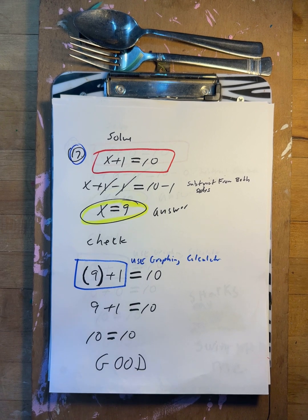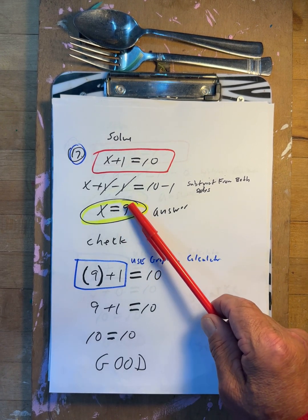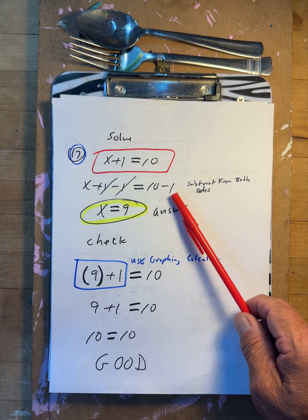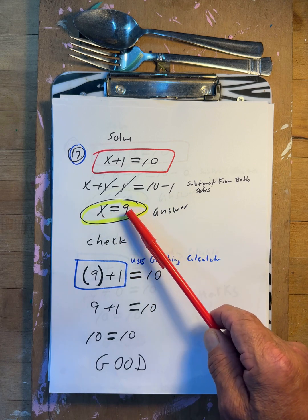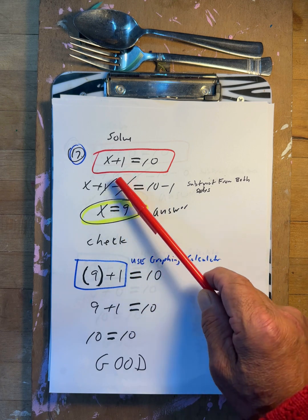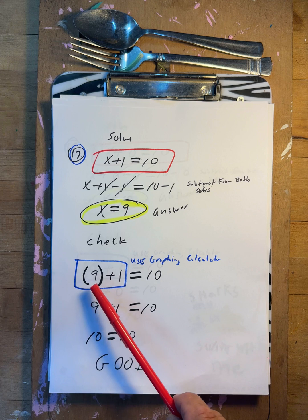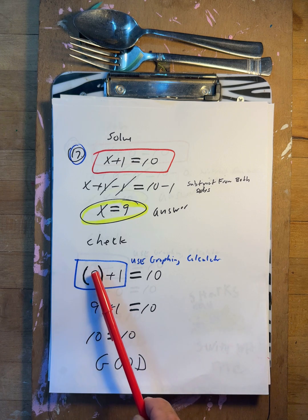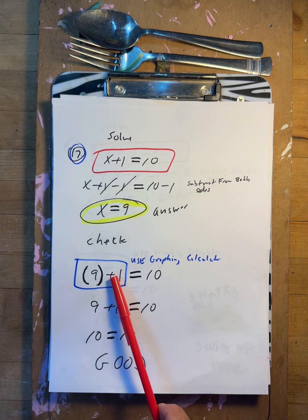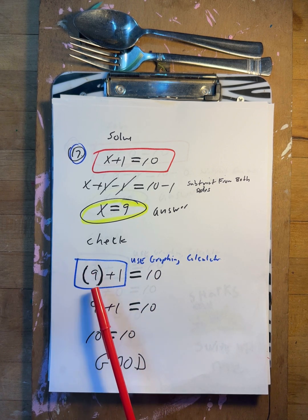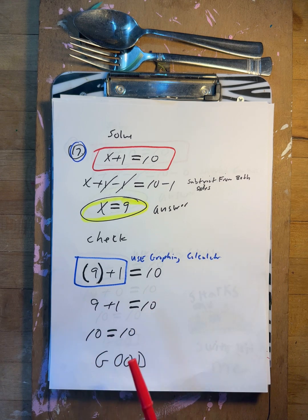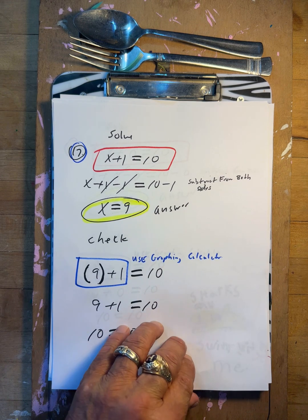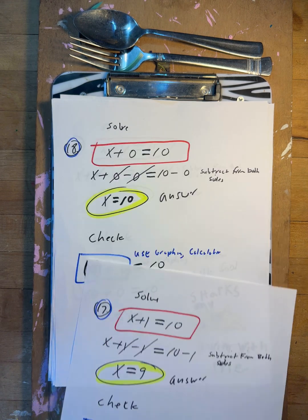x plus one equals ten. Minus one, minus one. So x equals nine. Put it back in: nine plus one — take braces off — nine plus one is ten. Ten equals ten. Yes, that works.